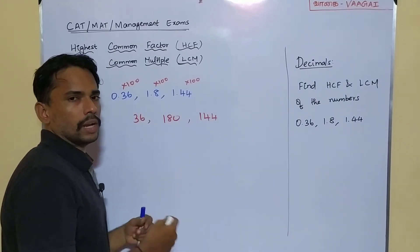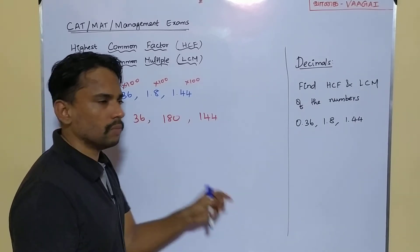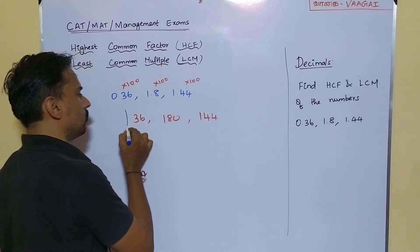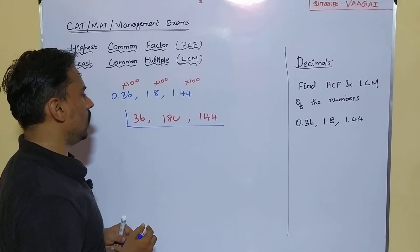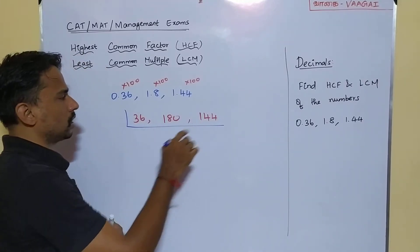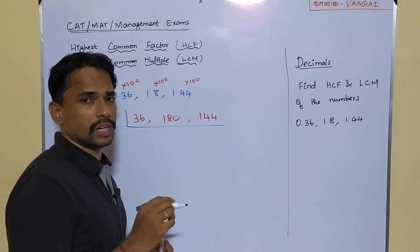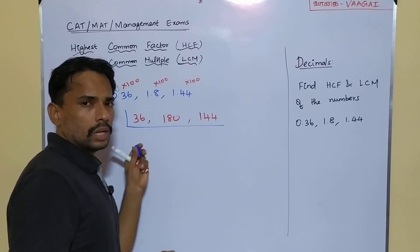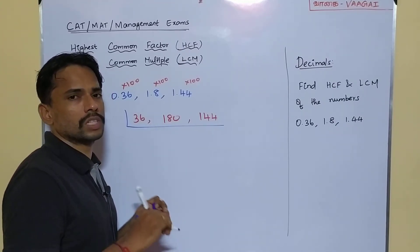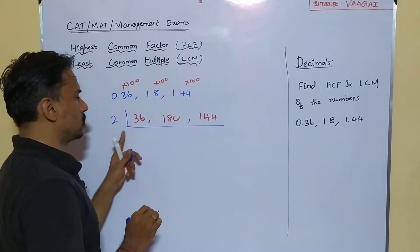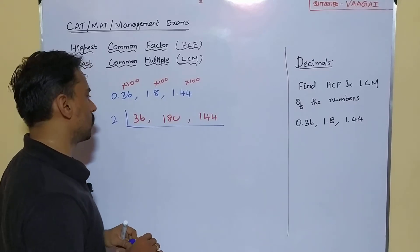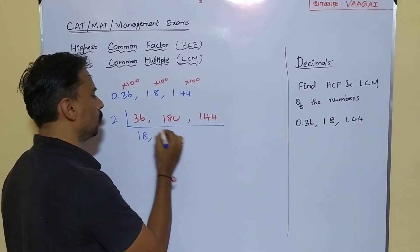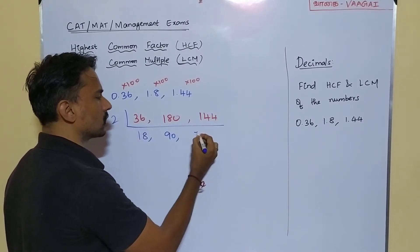Now we have three new numbers. 0.36 × 100 = 36, 1.8 × 100 = 180, and 1.44 × 100 = 144. We are now free from decimals. We will find HCF and LCM for these three new numbers using our usual procedure. Starting with 2 — all three numbers are divisible by 2: 36÷2=18, 180÷2=90, 144÷2=72.